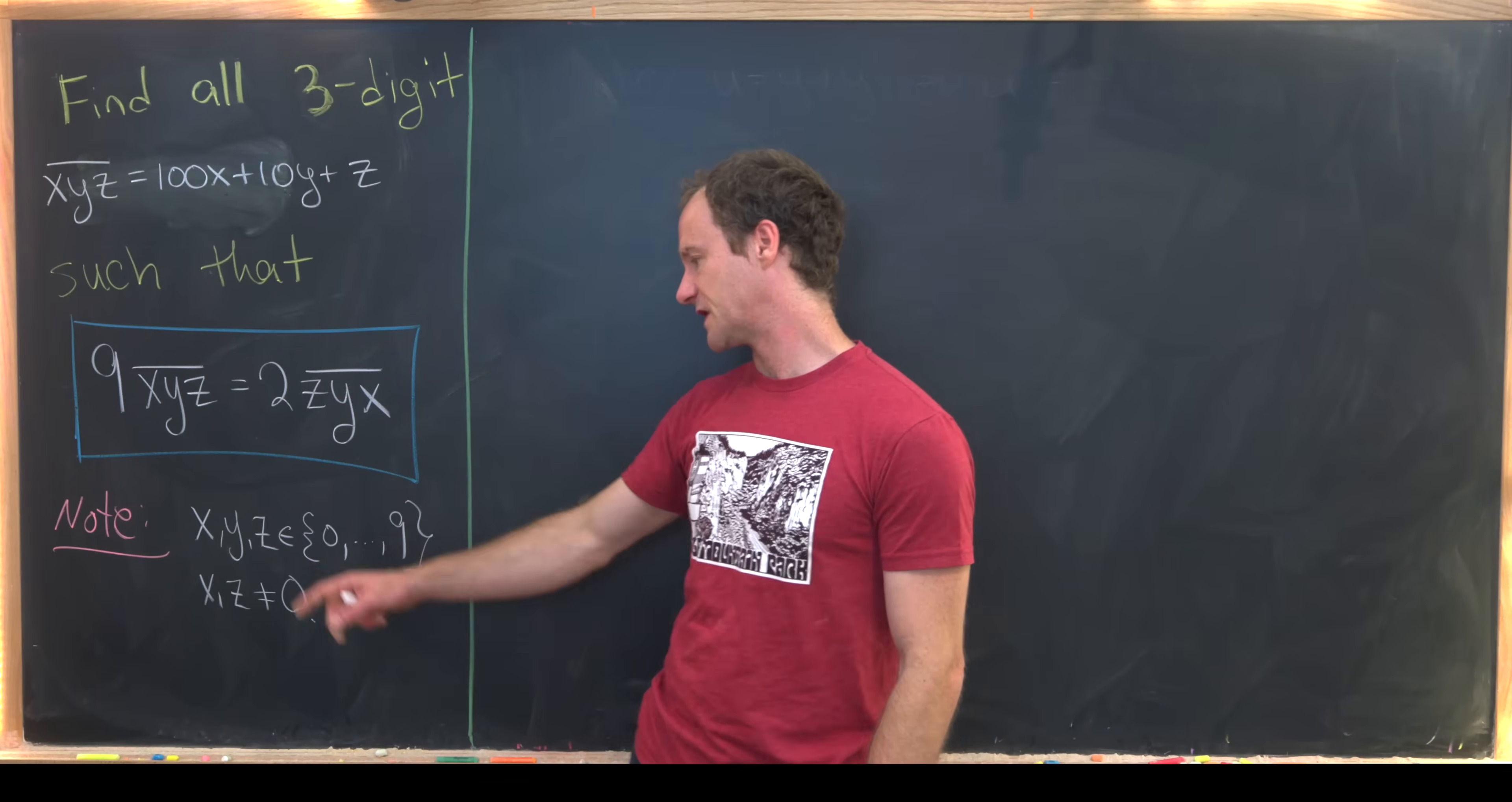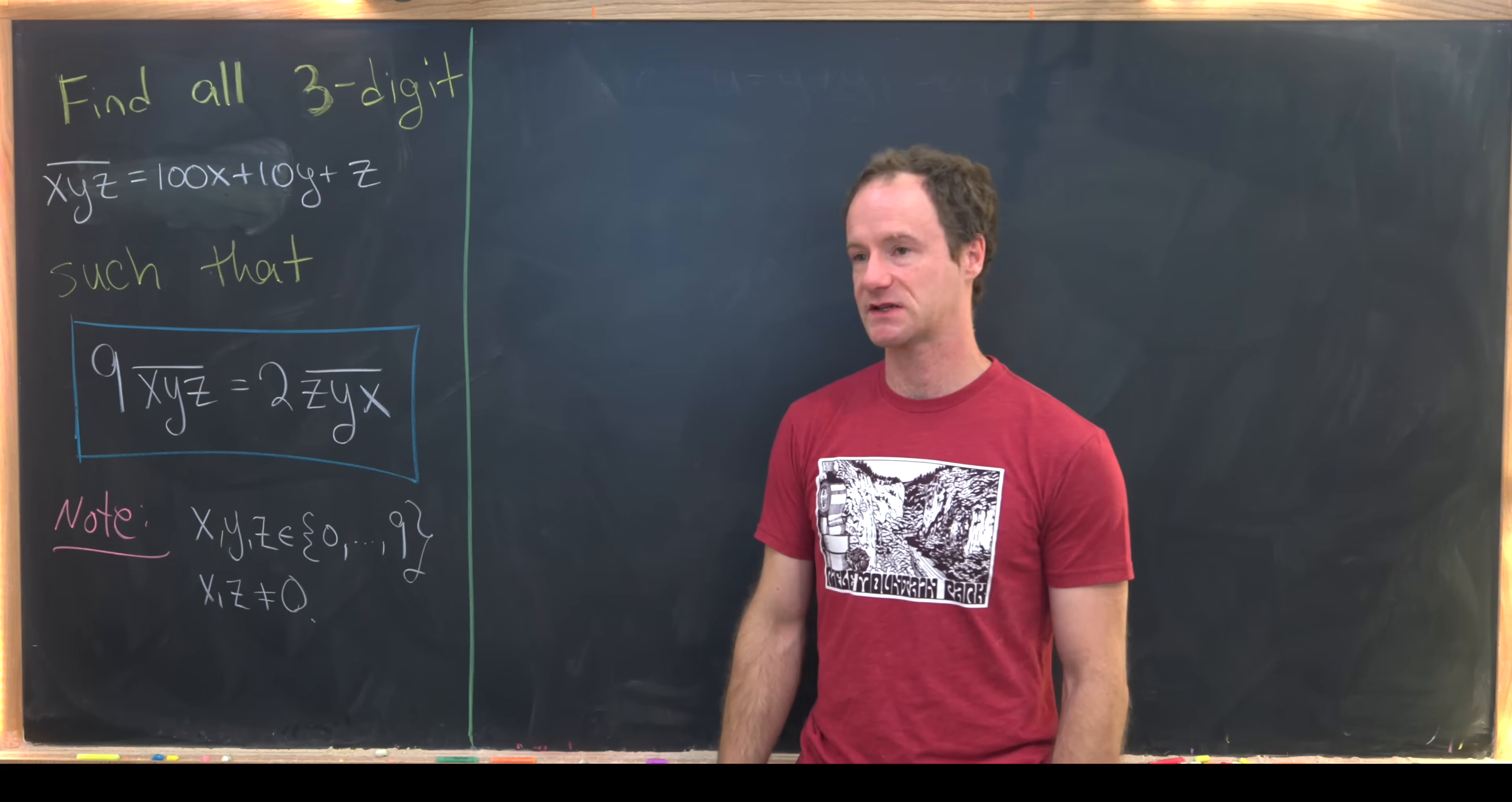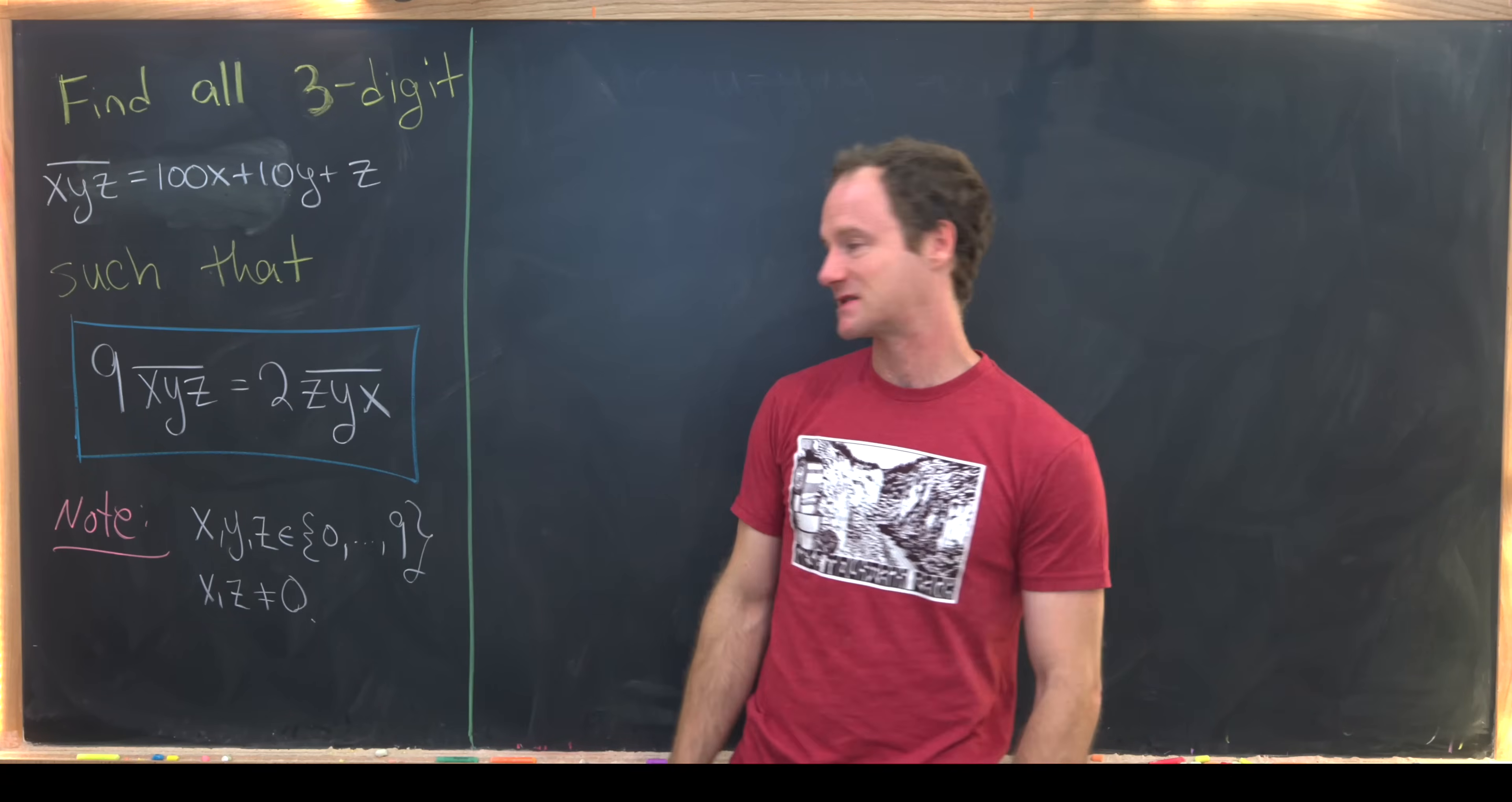Furthermore we'll impose the condition that x and z are not equal to 0, and that's because our goal is to find the three-digit number satisfying this blue boxed equation.